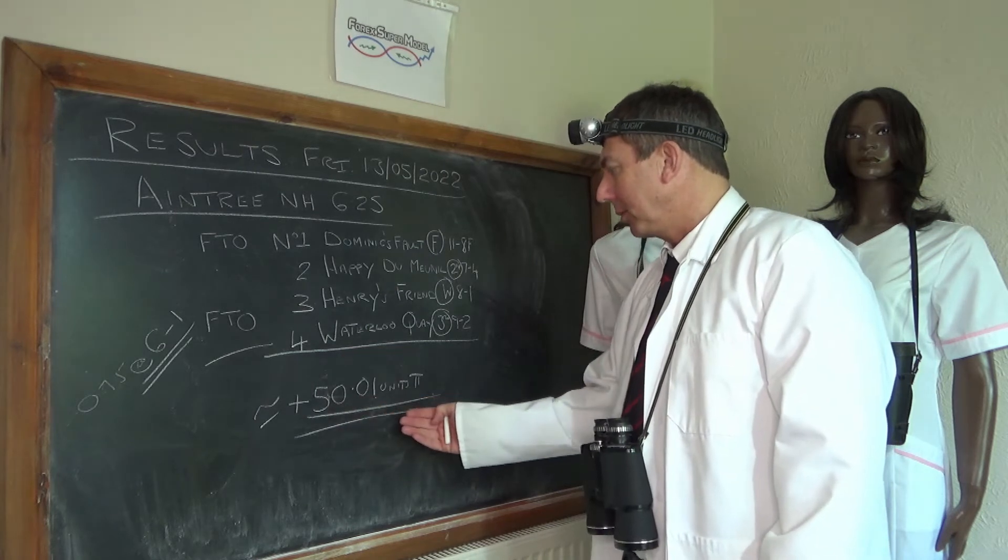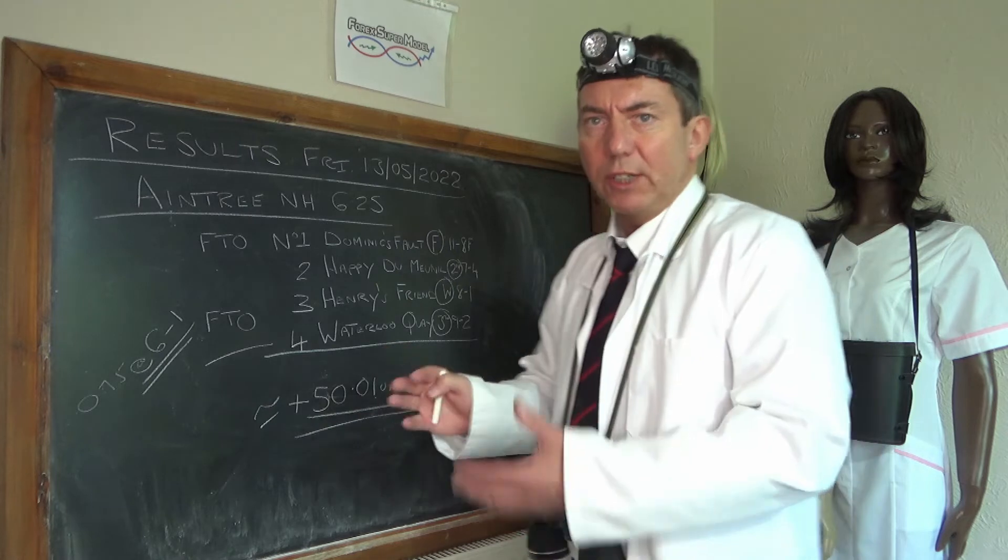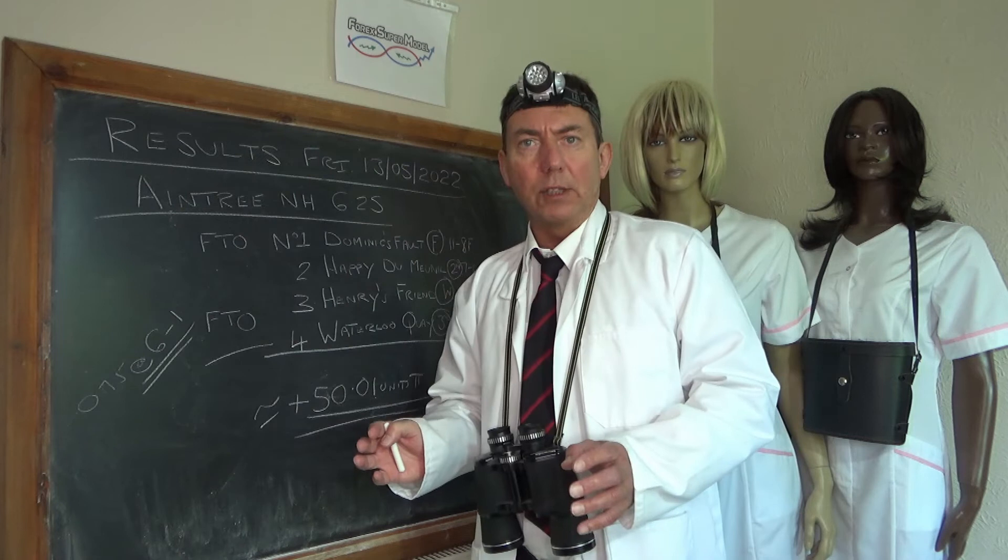Who knows how it would have got on under normal circumstances. We're down to plus 50.01 units profit on the account, so it's been sort of range bound. We'll hopefully take it from there. Let's stop that and write up today's racing.